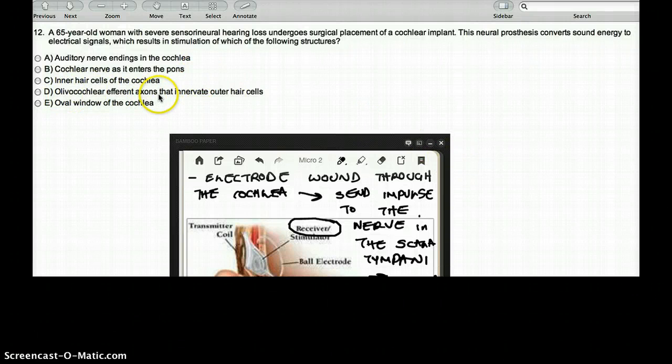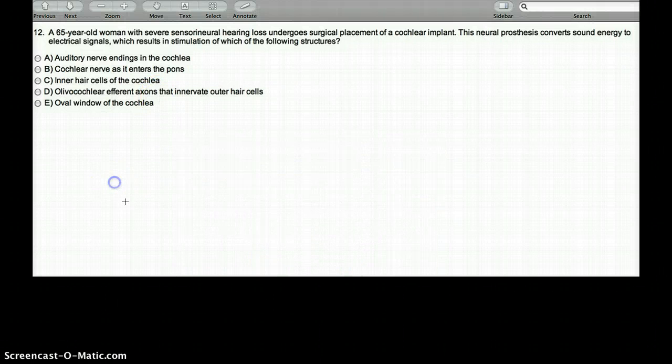Inner hair cells of the cochlea? No, that's not where the implant really goes. But the question also says, which of the following does the cochlea stimulate? Stimulation, results in stimulation of which of the following structures? So it really stimulates the nerve endings in the cochlea. What about inner hair cells of the cochlea? No, it does not stimulate the inner hair cells of the cochlea.